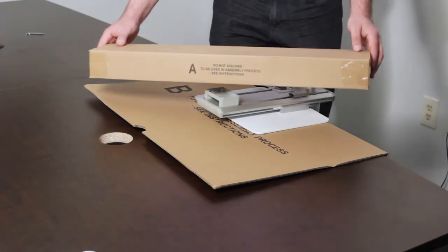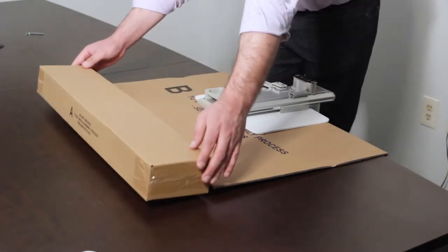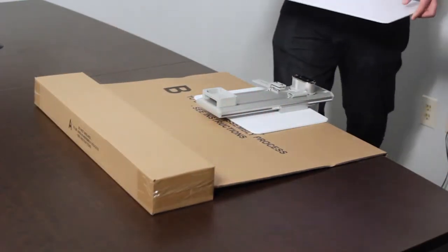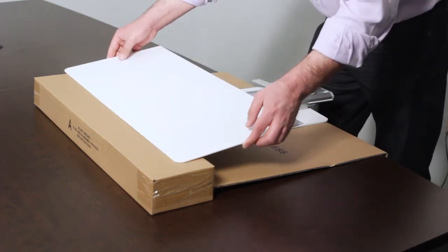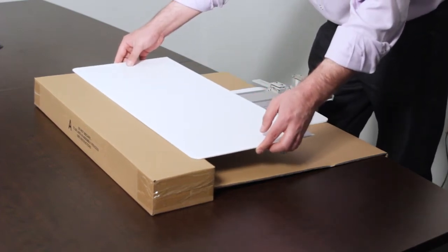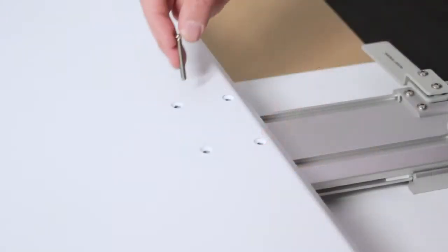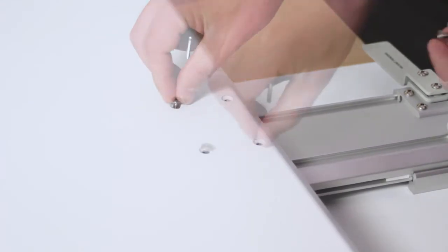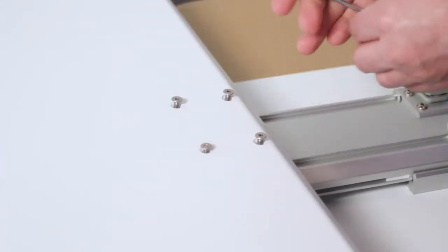Step 7. Place the cardboard spacer labeled A in the packaging in front of the unit to support the keyboard tray. Attach the keyboard tray to the column arm using the M5 x 38 mm screws through the spacer.